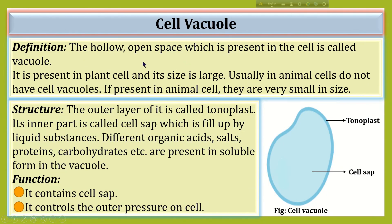Cell vacuole. The hollow, open space which is present in the cell is called a vacuole. It is present in plant cells and its size is large. Usually, animal cells do not have cell vacuoles; if present, they are very small in size. The outer layer of the vacuole is called tonoplast and its inner part is called cell sap, which is filled with liquid substance. Different organic acids, salts, proteins, and carbohydrates are present in soluble form in the vacuole. It contains cell sap and controls the outer pressure on the cell.